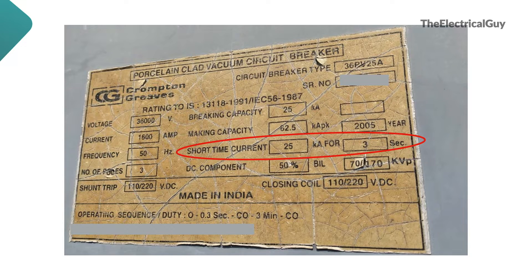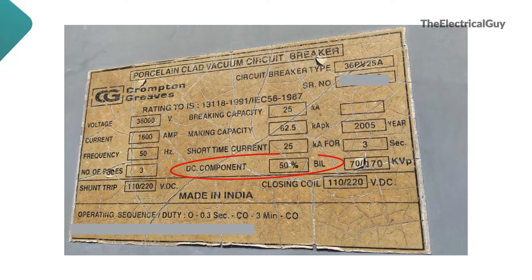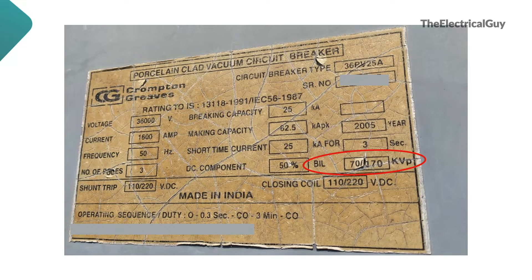Next is short-time current — this is the short-time current of the system which may occur in case of fault, and this current may remain in the system for 3 seconds. Our breaker is also capable of breaking 25 kA short-circuit current. Next is DC component. Short-circuit breaking current can be expressed in two values: the RMS value of the AC component and the DC component at the time of contact separation. On the nameplate, it is mentioned as 50%.